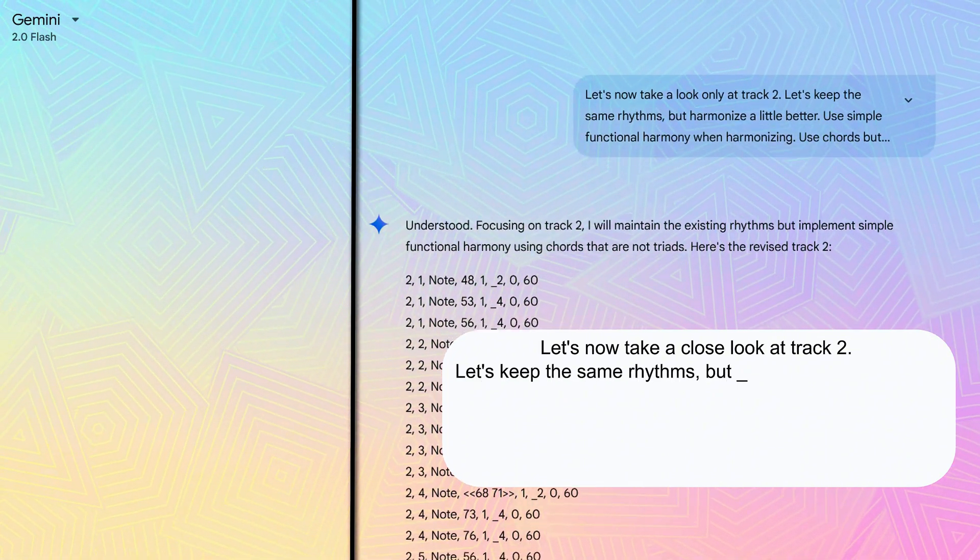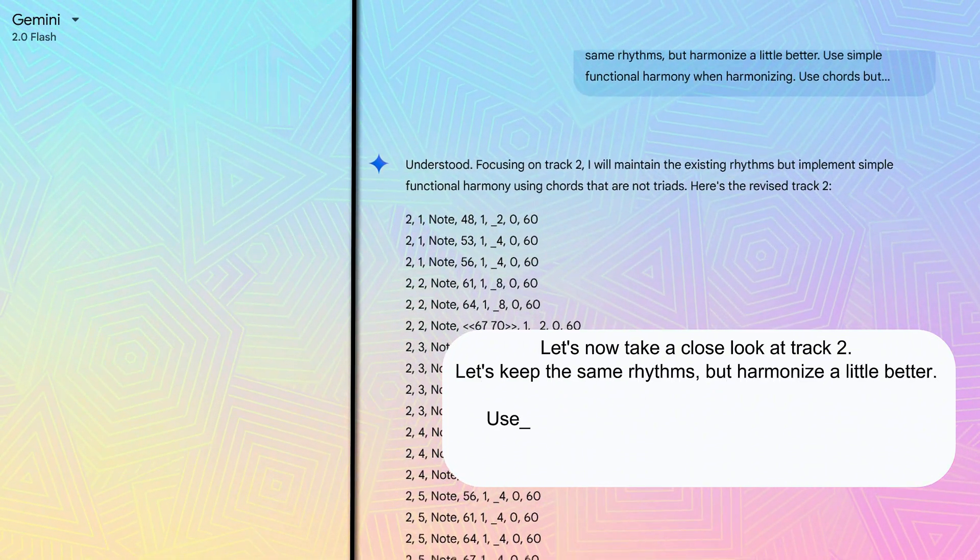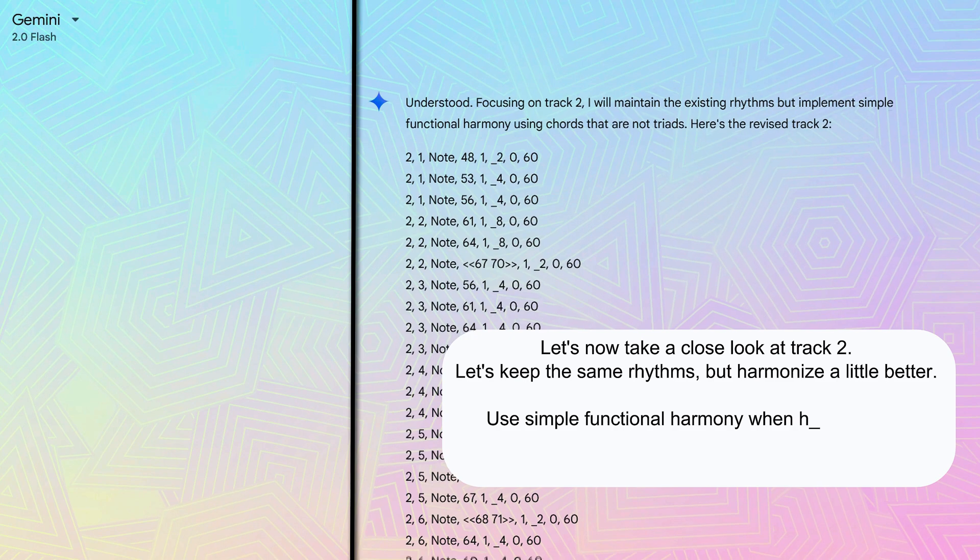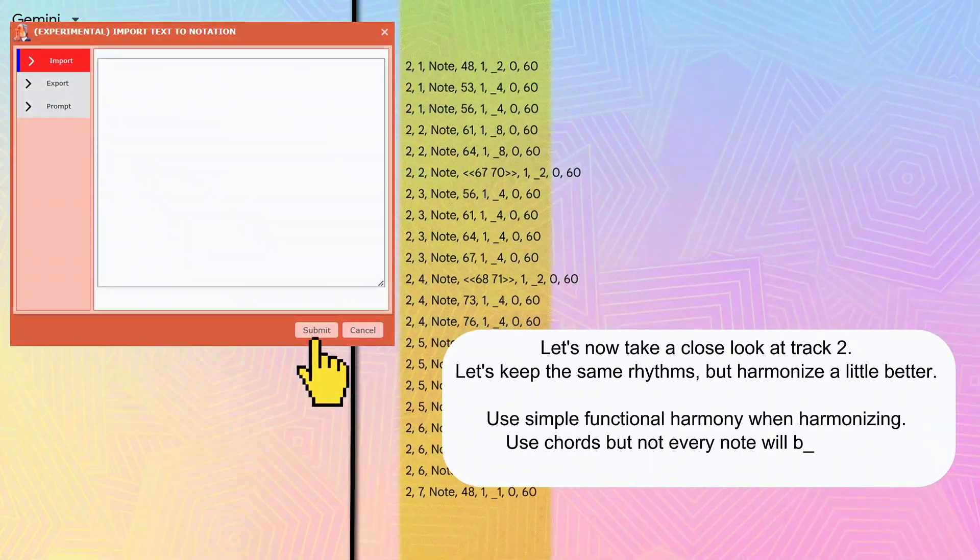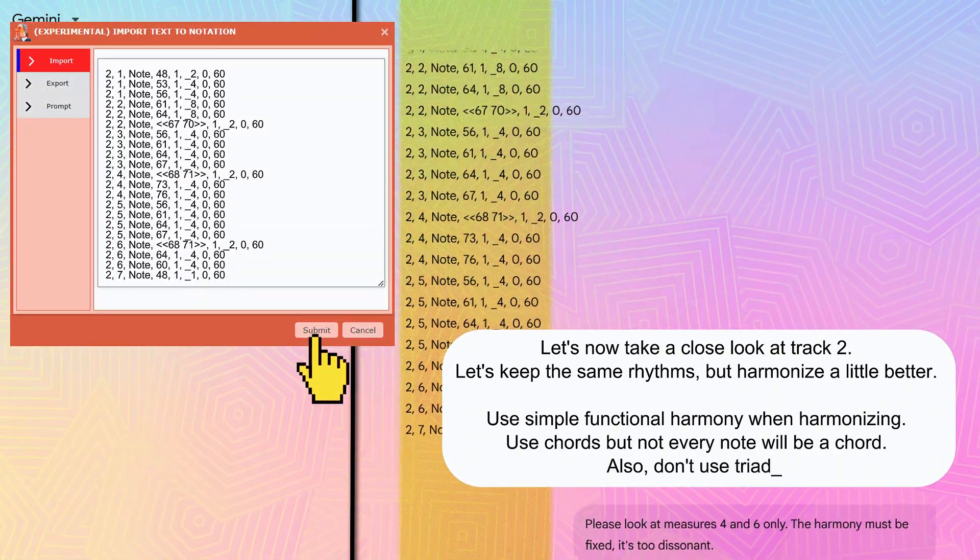Let's now take a close look at track 2. Let's keep the same rhythms, but harmonize a little better. Use simple functional harmony when harmonizing. Use chords, but not every note will be a chord. Also, don't use triads.